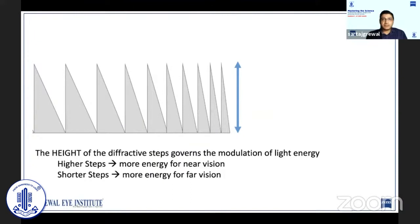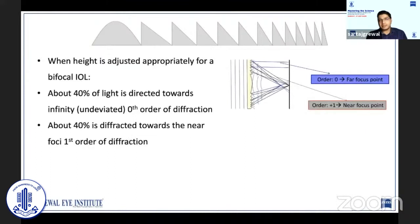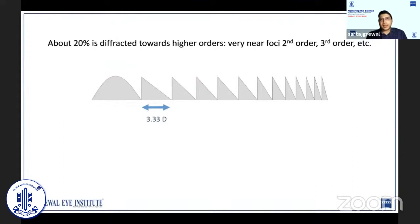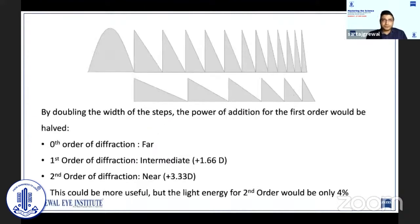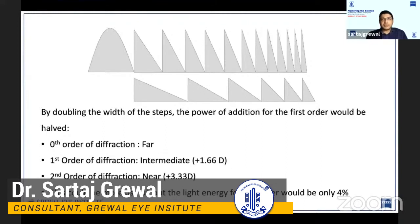The height of the diffractive steps governs the modulation of light energy and essentially the orders of diffraction produced. Most bifocal IOLs distribute light such that 40% is directed towards infinity, 40% for near vision, and the remaining 20% is directed towards higher orders. It is this 20% of light going towards higher orders of diffraction that is responsible for photic phenomena such as glare and halo experienced with these lenses. Since the second order diffraction would result in a near add of over six diopters, it would be too high to be clinically useful. By doubling the width of the steps, the power of addition for the first and second order could be halved, resulting in first and second order adds of 1.66 and 3.33 diopters respectively, which would be very useful clinically for patients.